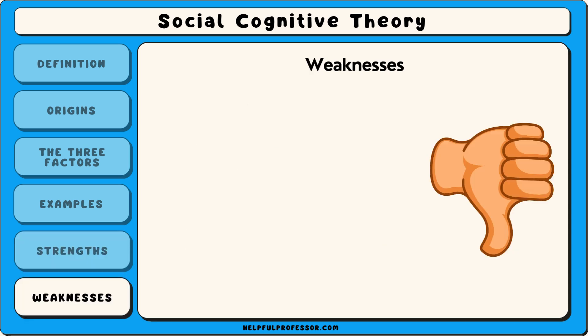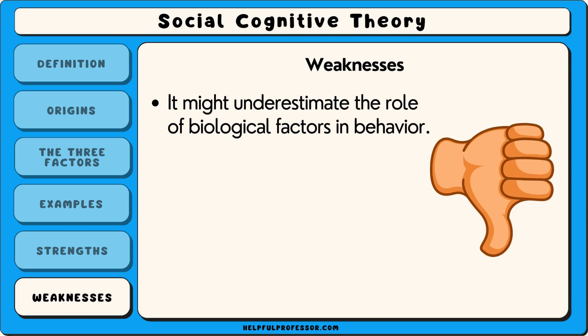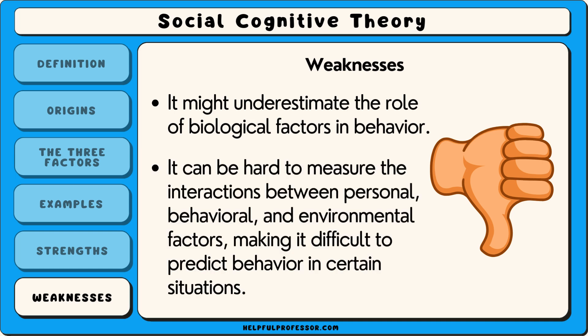However, social cognitive theory has some weaknesses. One criticism is that it might underestimate the role of biological factors in behaviour. For example, it doesn't always account for how genetics or brain chemistry might influence how a person learns or behaves. Another criticism is that it can be hard to measure the interactions between personal, behavioural and environmental factors, making it difficult to predict behaviour in certain situations.